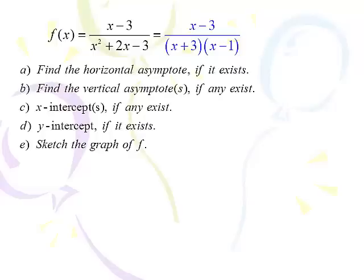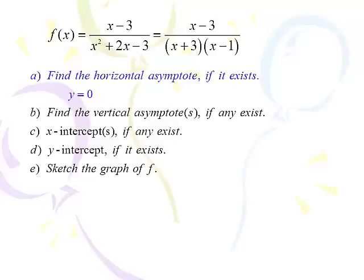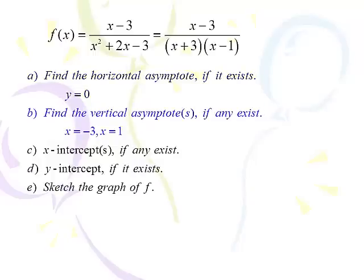When we look at the horizontal asymptote, I'm going to go back to the original function before factoring. This is the first case of horizontal asymptote — as x goes to infinity, the denominator is going to get huge compared to the numerator, so our horizontal asymptote will be y equals 0, the x-axis. Our vertical asymptotes are the values of x that cause a division by zero error: x equals negative 3 and x equals 1.